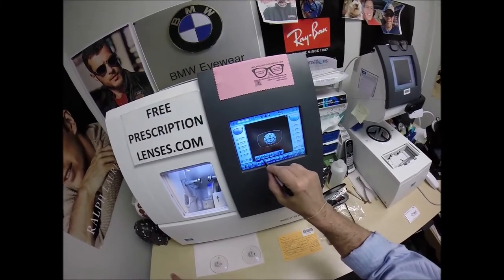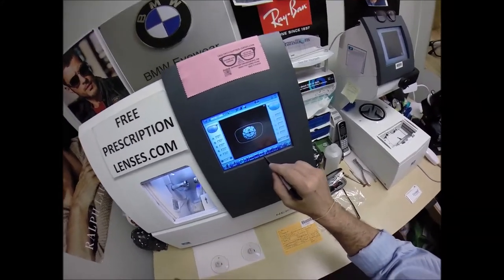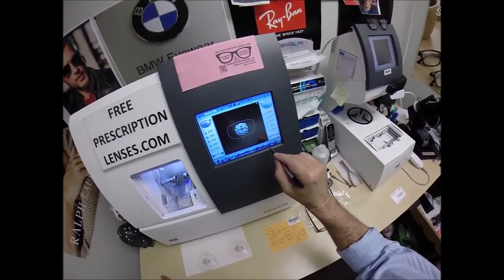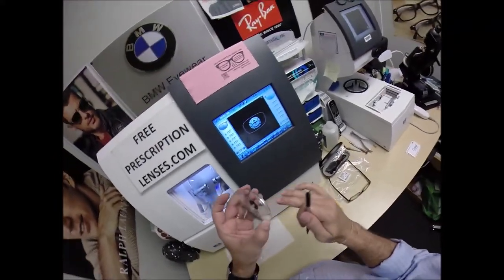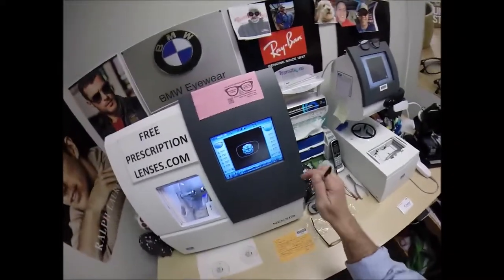So these are polycarbonate lenses. If they were plastic, high index plastic or Trivex, I would select that. I'm not going to polish the edge of the lens because it's not going to be seen on this frame, but I will put a safety bevel on the rear concave surface of the lens, but not on the front surface because it's not going to protrude from the front of the frame.